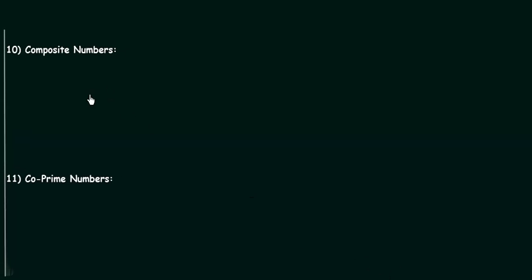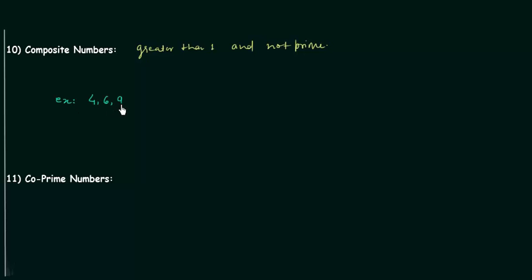The tenth type is composite numbers. Composite numbers are numbers which are greater than 1 and are not prime. Some examples are 4, 6, 9, and 15. For example, 4 can be factorized as 1, 2, and 4. So 4 is divisible by 1 and itself, but it is also divisible by 2 — therefore it is not prime, hence it is a composite number.